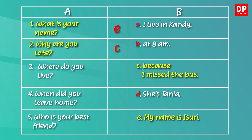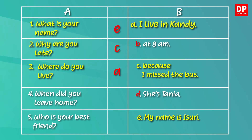Okay children, what about the third one? Where do you live? The question word 'where' expects you to give a place as your answer. So here you have to give the place you live. The matching response is E — I live in Kandy.